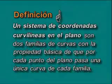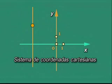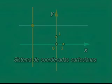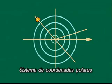Por ejemplo, el sistema de coordenadas cartesianas son esas dos familias: rectas verticales y rectas horizontales. ¿Y se cumple la propiedad básica? Sí, se cumple. Otras dos familias son circunferencias concéntricas y rayos que parten del centro de las circunferencias. Este sistema se llama sistema de coordenadas polares y se verifica también la propiedad. Y así se pueden dibujar muchas más familias de curvas.